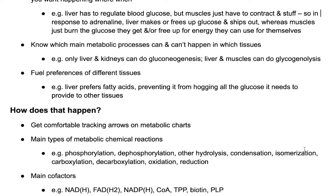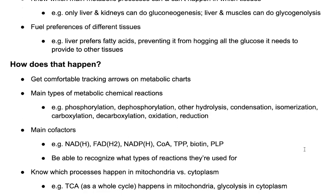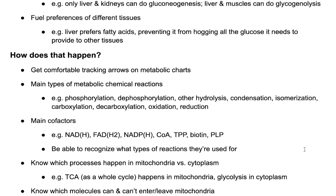Since erythrocytes don't have mitochondria, they can't do the electron transport chain. This gets into what are the fuel preferences of different tissues. For example, your liver is going to prefer fatty acids, which prevents it from hogging all the glucose it needs to provide to the other tissues. However, your red blood cells are not going to prefer fatty acids because they can't even do beta oxidation without mitochondria, so they're going to really want the glucose.